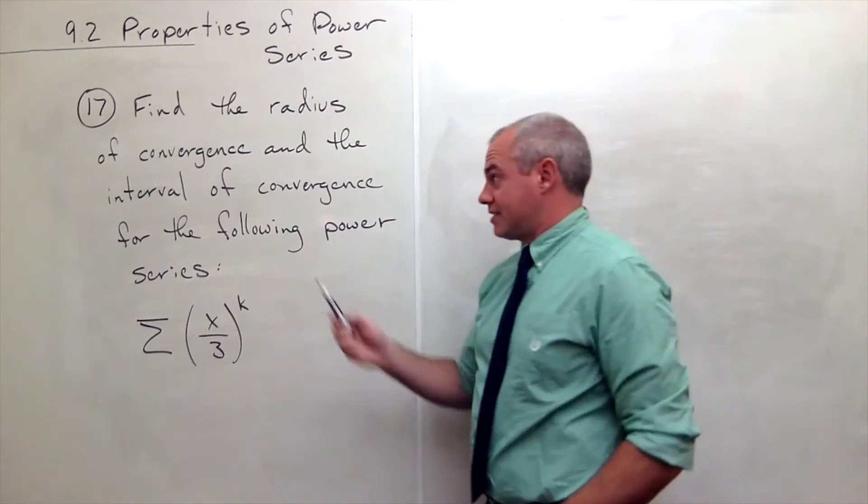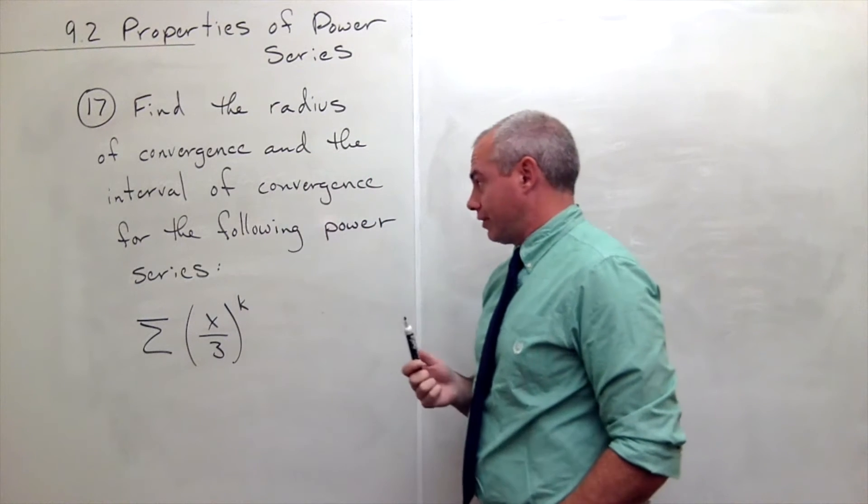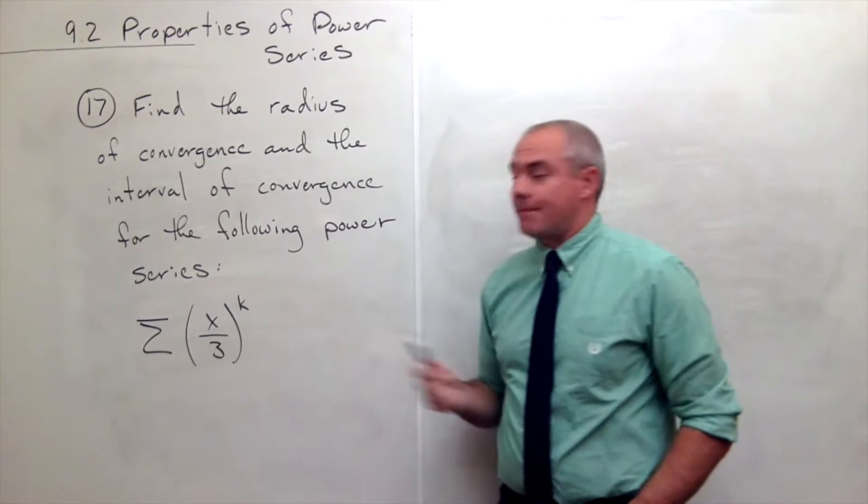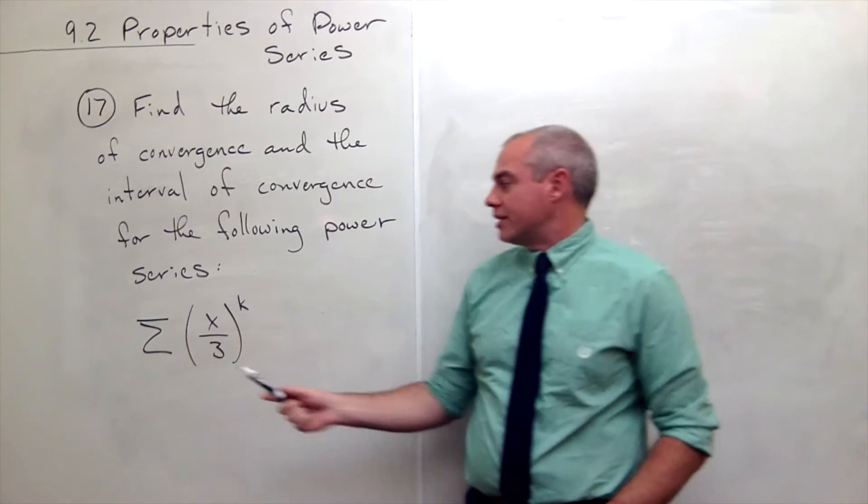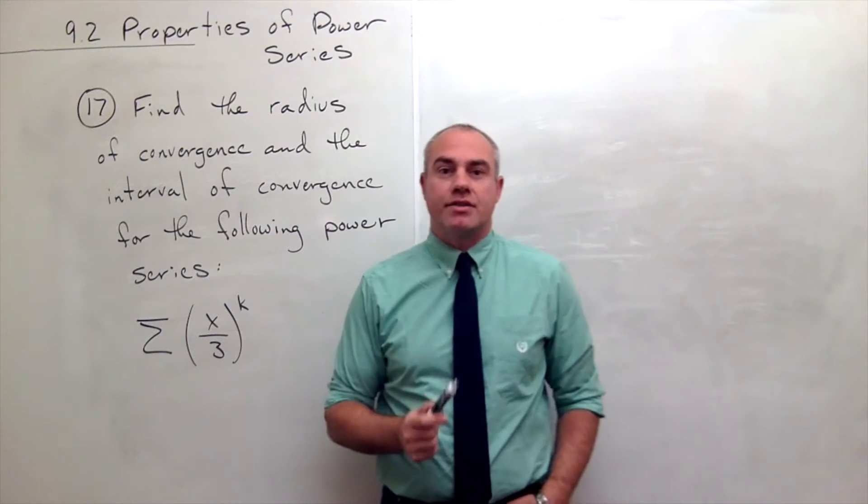Problem 17 asks us to find the radius of convergence and the interval of convergence for the following power series. And the power series we're starting with is the sum of (x/3) raised to the k power.